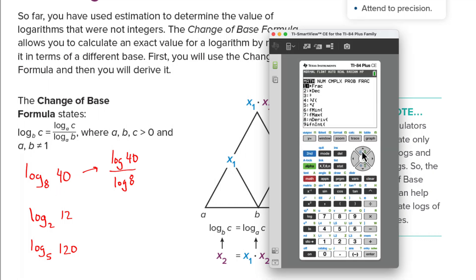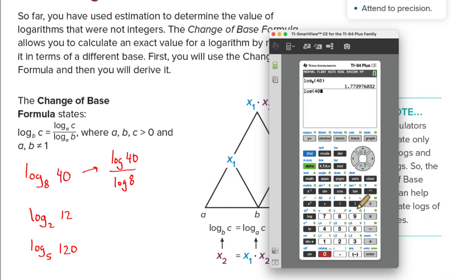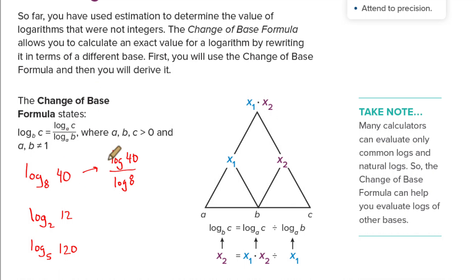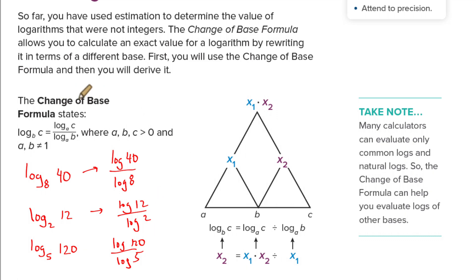On the calculator, hit math and up twice — we get log base 8 of 40, which is approximately 1.77. Now if I just do log of 40 divided by log of 8, I get the same answer: 1.77. So they used to rewrite log base 2 of 12 as log of 12 over log of 2, and log base 5 of 120 as log of 120 over log of 5. That's the change of base formula.